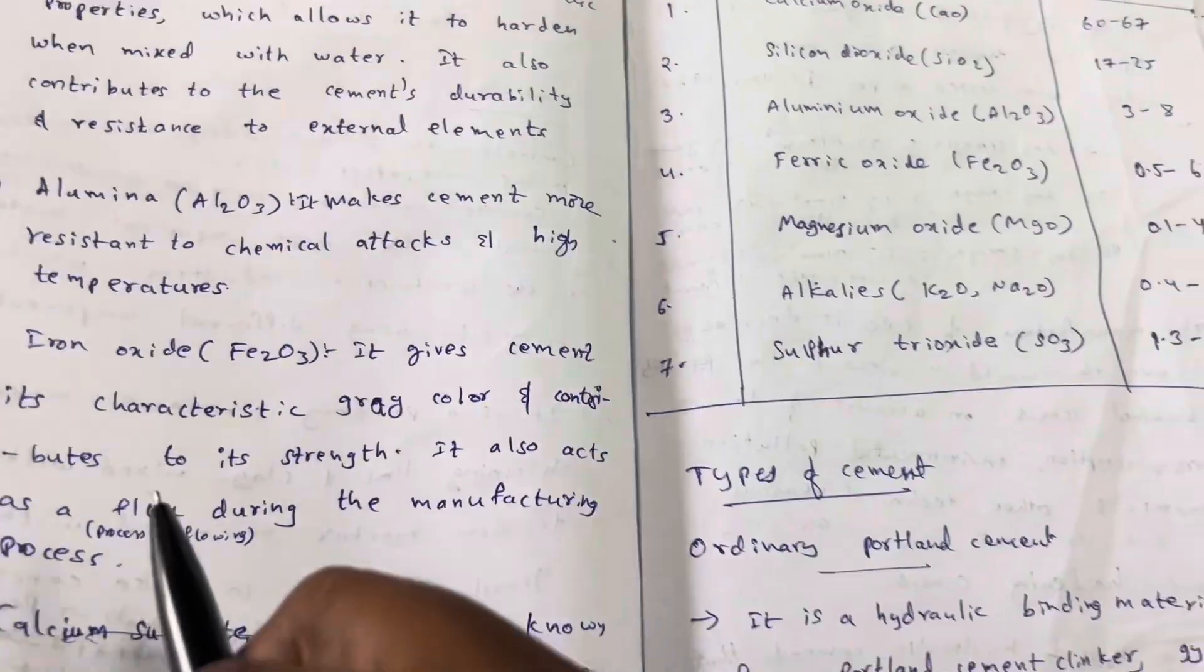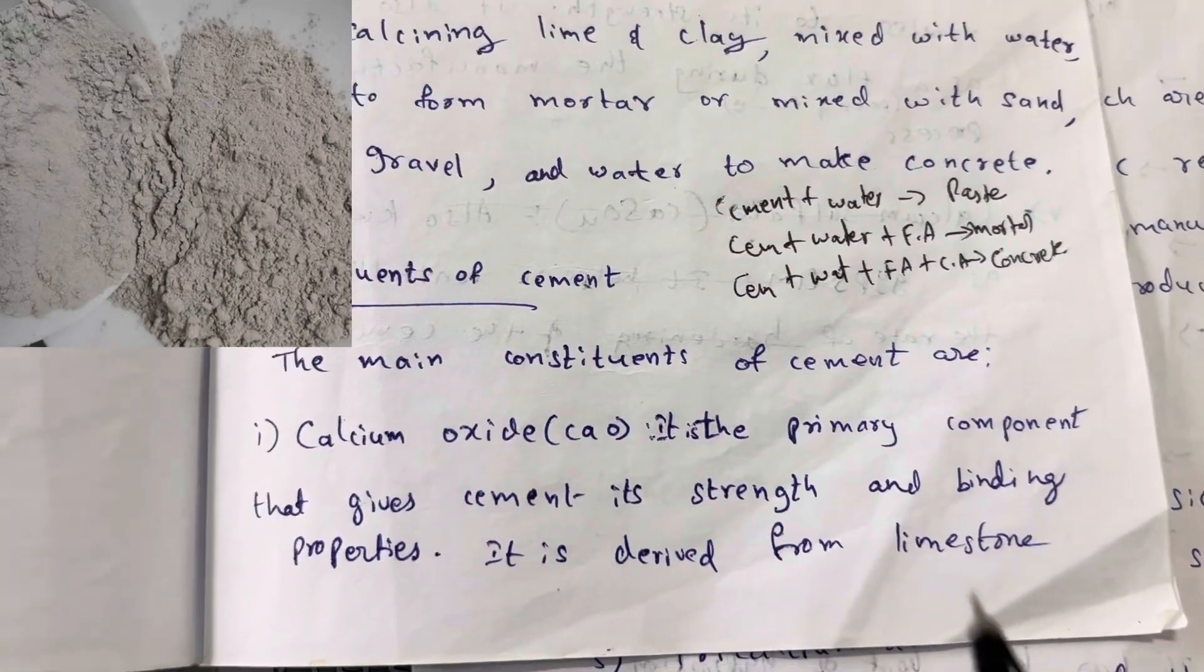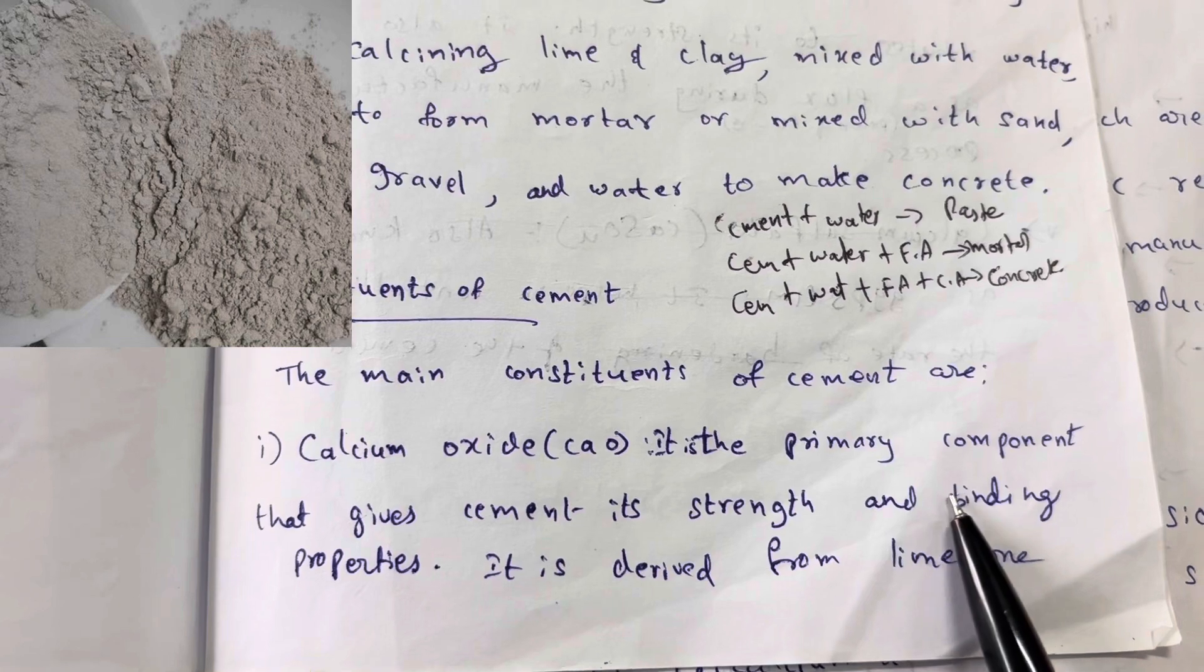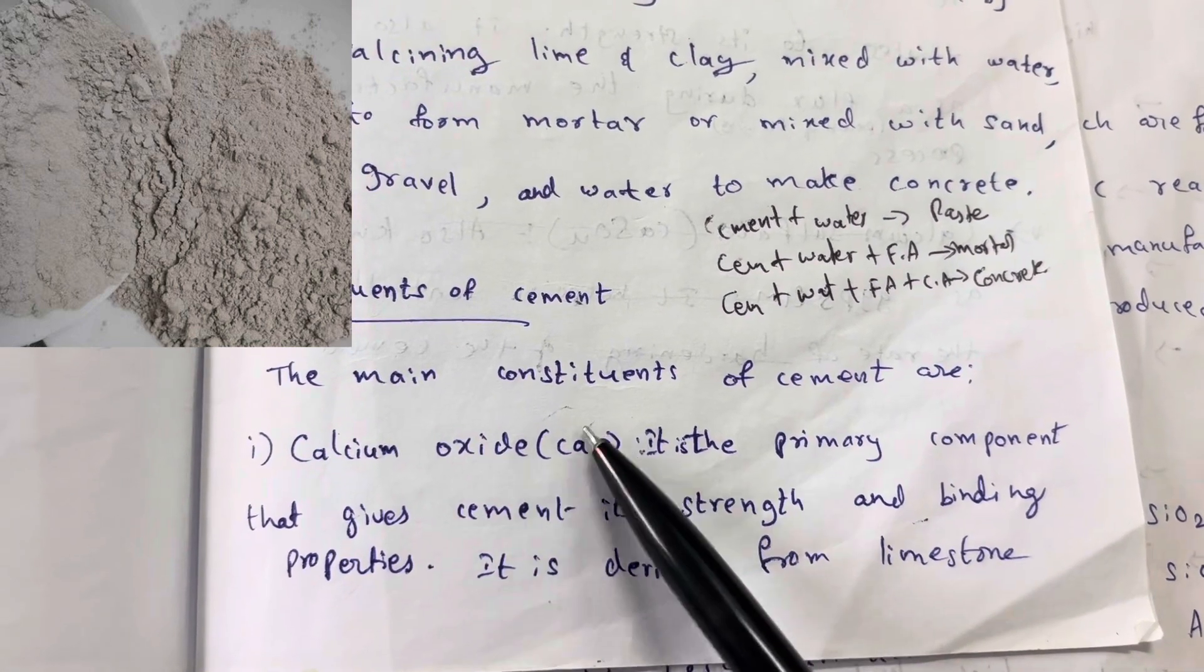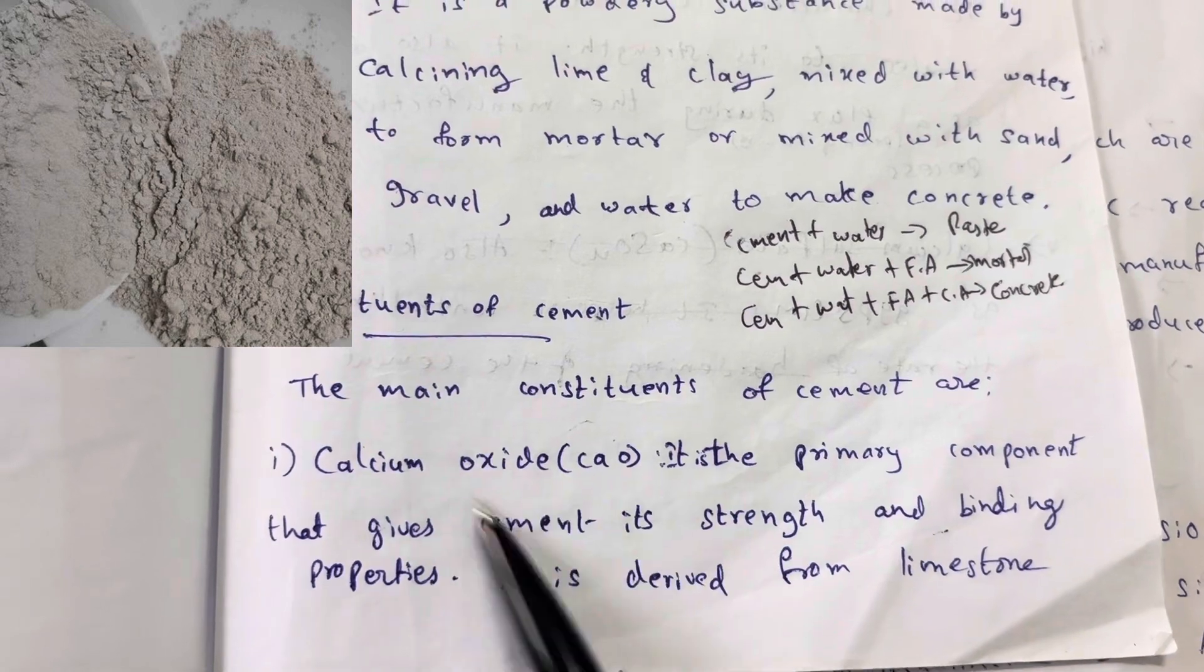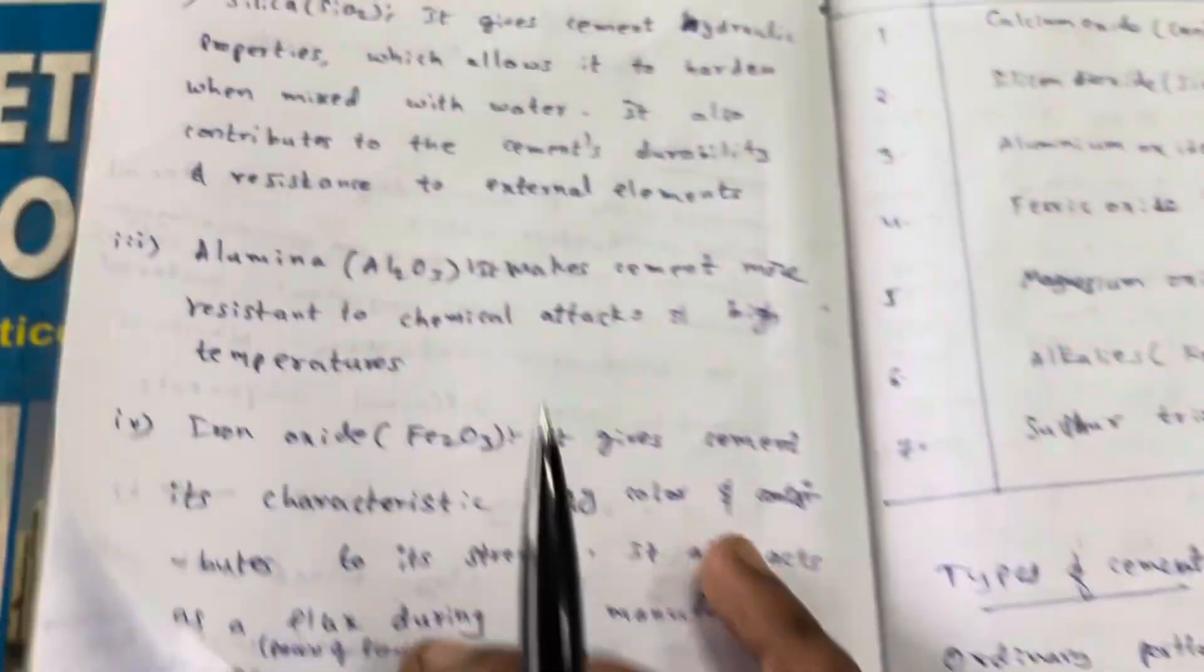First, calcium oxide CaO. It is the primary component that gives cement its strength and binding properties. CaO is responsible for binding and strength. It is derived from limestone.